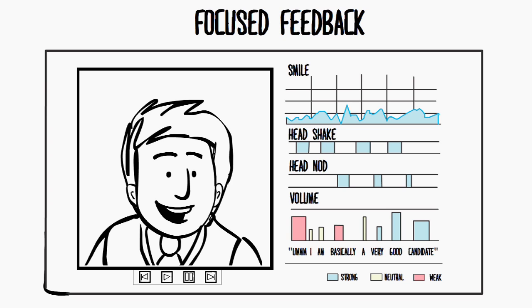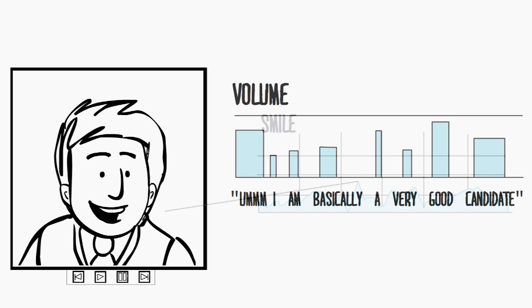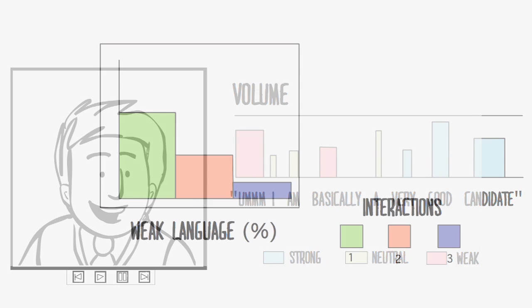For example, it can show you where in the interaction you smiled. It can keep track of your voice modulation — how you modulate your voice. It can keep track of some of the weak language you might have used, like "mmm," "ah," "basically."